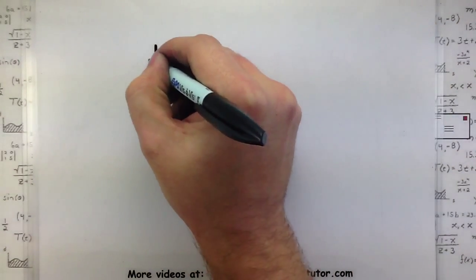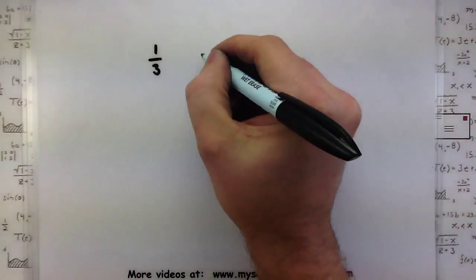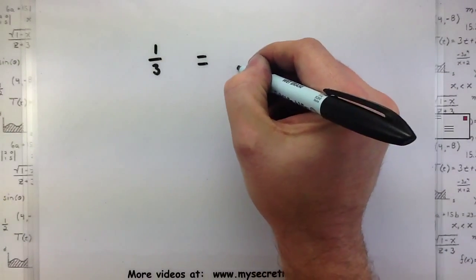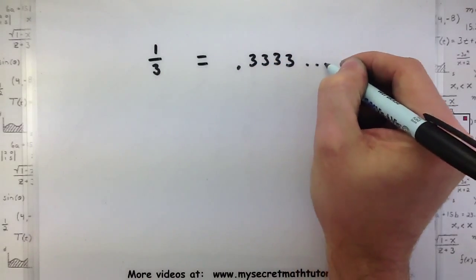The first way we're going to approach this is to look at some other numbers and their decimal and how they repeat. So one number that many people are familiar with is 1 third. And many people will say that's equal to 0.3333 and that just goes on and on forever.